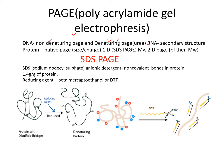RNA is separated on the basis of their secondary structure, and protein is separated with different techniques. First is native PAGE, where the conformation of the protein is not changed, so they separate on the basis of their size and charge. Second is one-dimensional PAGE, also called SDS-PAGE, where protein is separated on the basis of molecular weight. Third is 2D PAGE, where two dimensions are used — first separated on the basis of isoelectric point, and later on the basis of molecular weight.